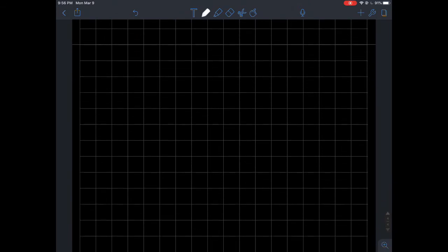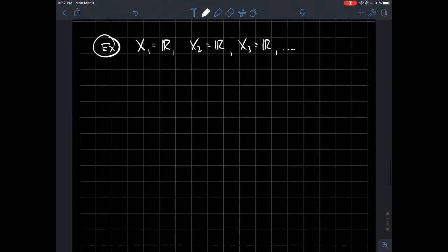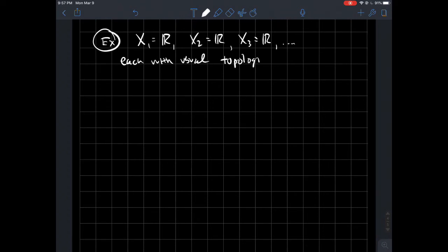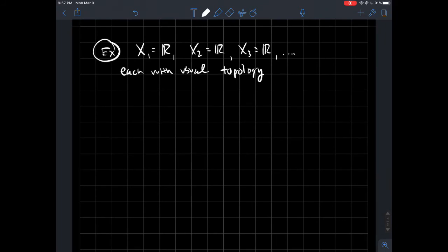Weird stuff happens when we start taking infinite products. That's the point of this section. Let's say x1 equals R, x2 equals R, x3 equals R, et cetera. I'm going to use numbers to enumerate my sets, each with the usual topology. I'm thinking like intervals (a,b) is open. That's what I mean by this.